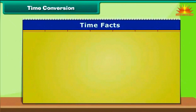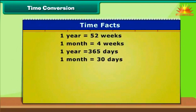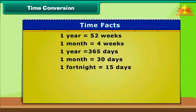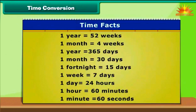Time conversion. Here are some facts about time: 1 year is equal to 52 weeks; 1 month is equal to 4 weeks; 1 year is equal to 365 days; 1 month is equal to 30 days; 1 fortnight is equal to 15 days; 1 week is equal to 7 days; 1 day is equal to 24 hours; 1 hour is equal to 60 minutes; 1 minute is equal to 60 seconds.